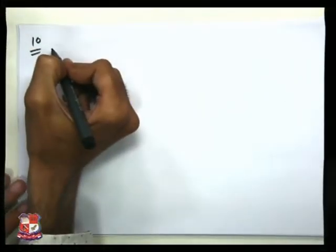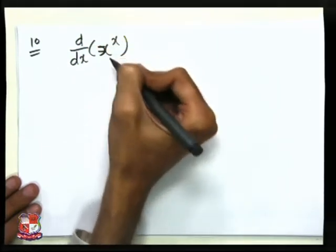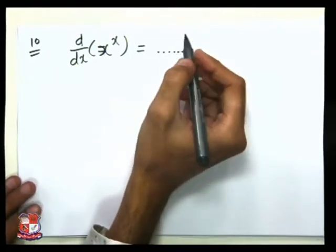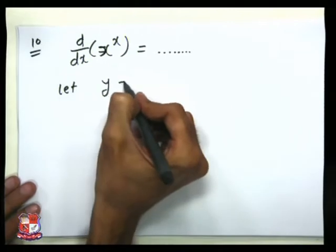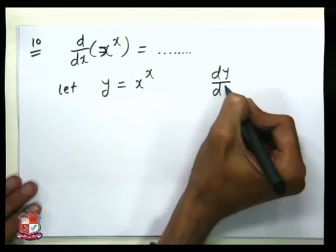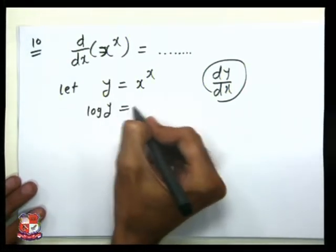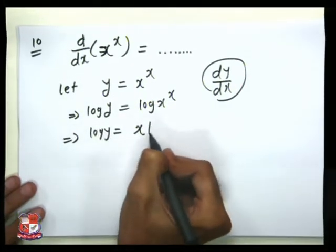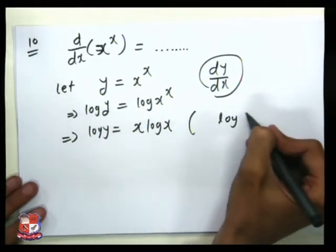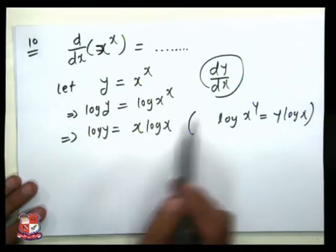This is the solution of ninth. Now example number 10 is also from differentiation, and the question is: d/dx of x raised to x is equal to blank. We need to differentiate x raised to x with respect to x. Let y = x^x, and we need to find dy/dx. First, take log of both sides: log y = log(x^x). Using the property log(x^y) = y·log(x), we get log y = x·log x.